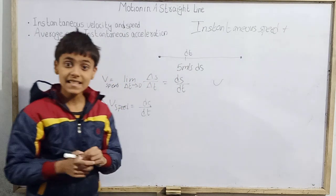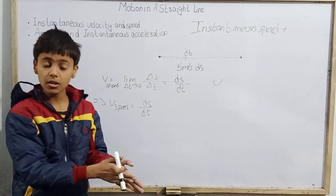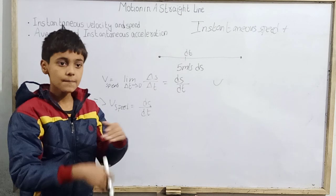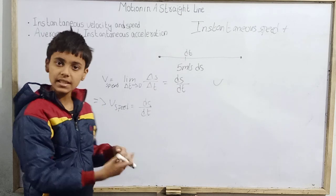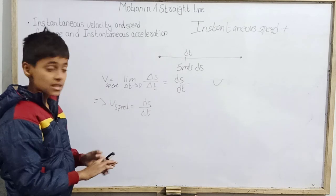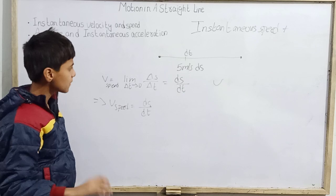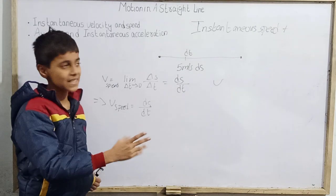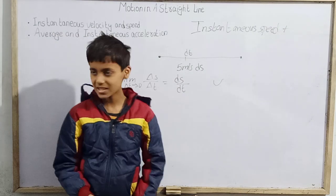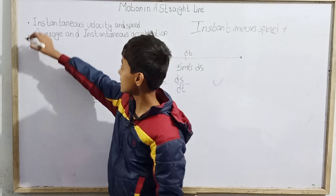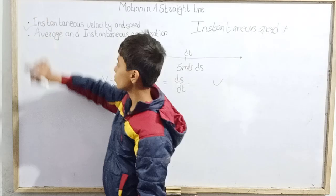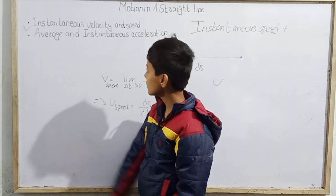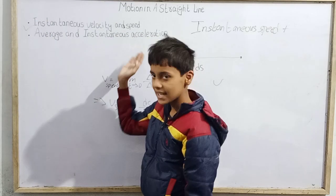The main difference: instantaneous speed will always remain positive and can never be negative, while instantaneous velocity can be negative — as we saw with minus 11 meters per second in the example.